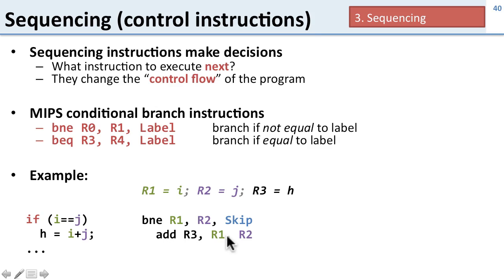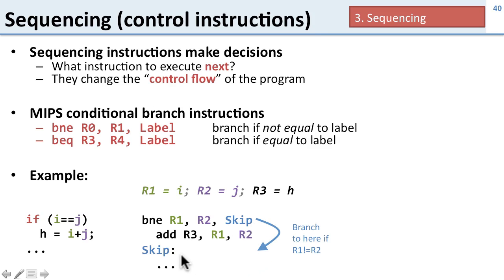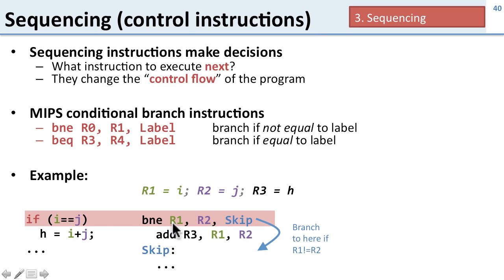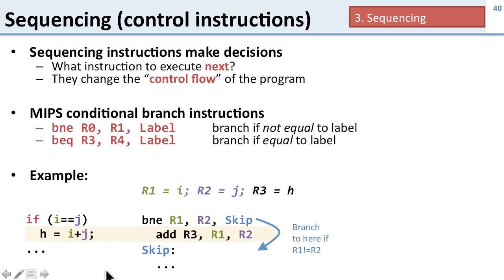Then I have add R3 R1 R2, which corresponds to h equals i plus j. If they're not equal I jump to skip, which is right after the addition. So if they're not equal I skip over the addition. If they are equal I don't skip and I do the addition. That gives us the execution we want: if equal, do the addition; if not equal, skip it.